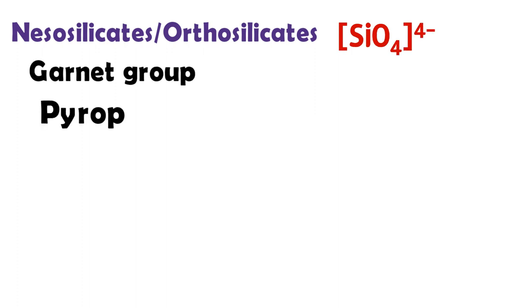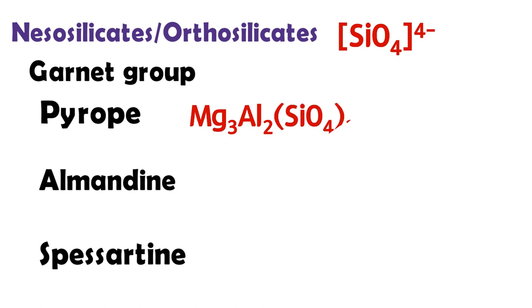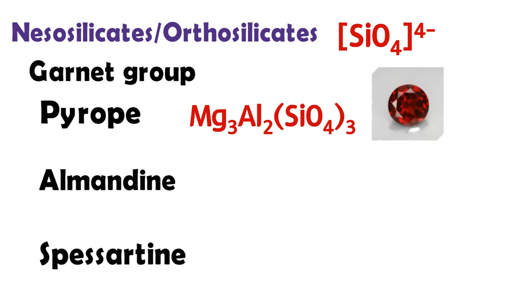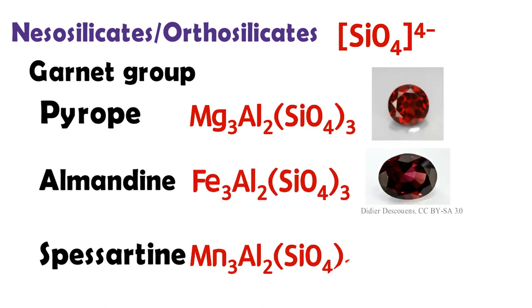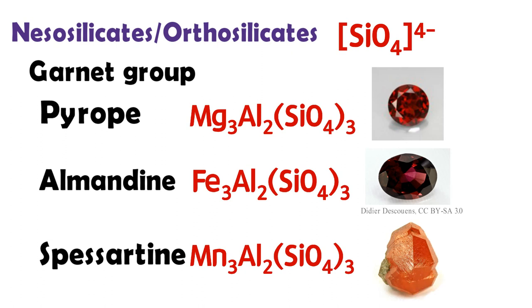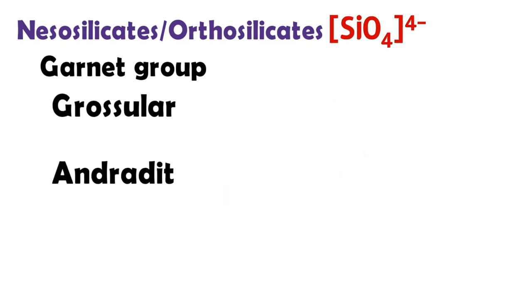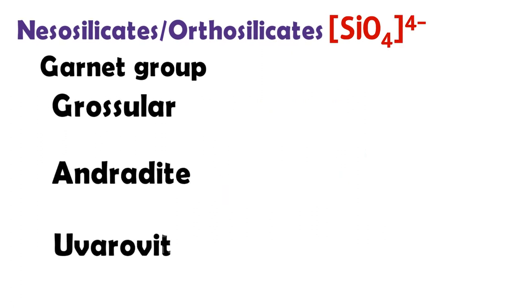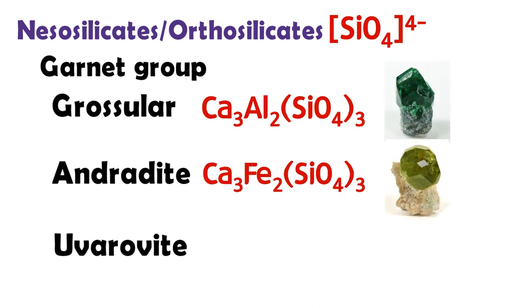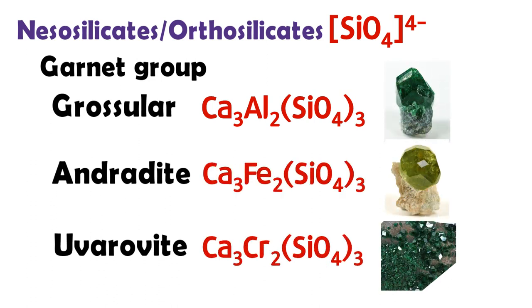Garnet also belongs to nesosilicate. All garnets have similar physical properties and crystal form, but differ in chemical composition. The different species are pyrope, almandine, spessartine garnet, and grossular, andradite, uvarovite garnet. These are two solid solution series each.